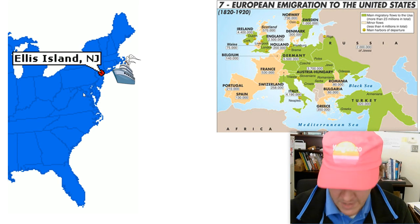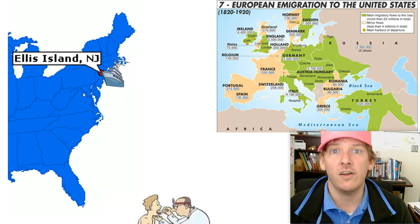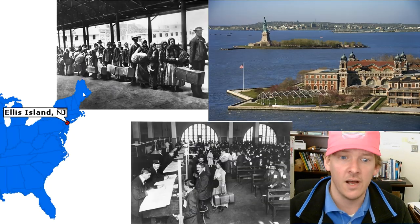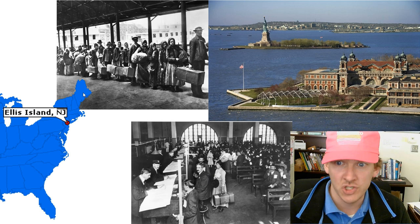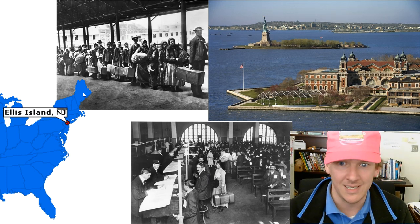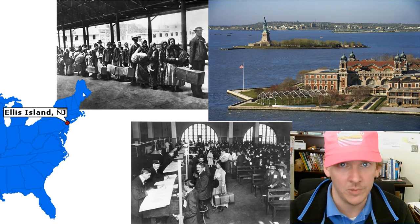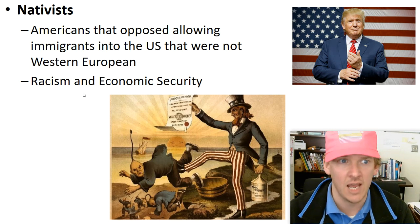Ellis Island is a famous checkpoint for immigrants into the country where they have a health check and background check. It is a historical place you can visit today, and a lot of the records have been preserved so you can find out where your ancestors came from.